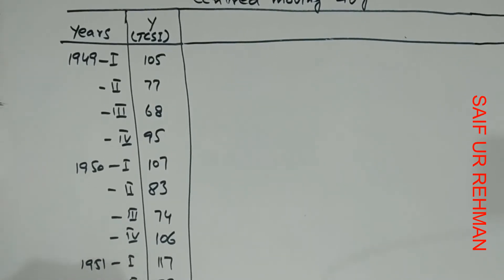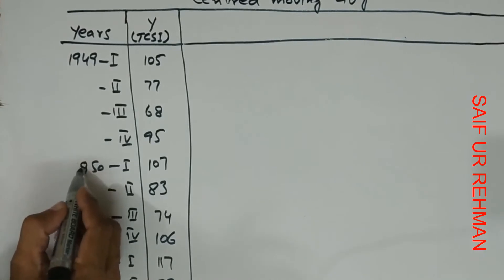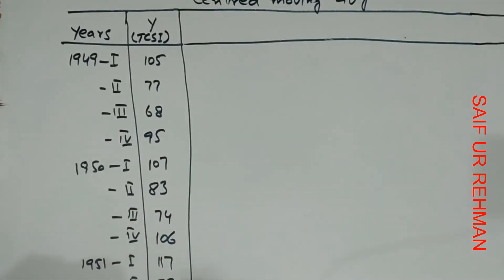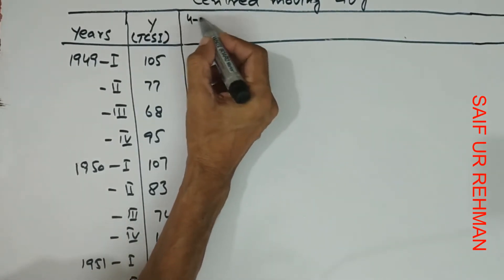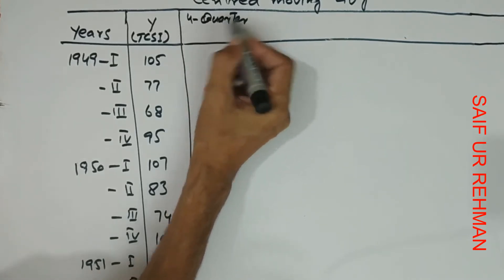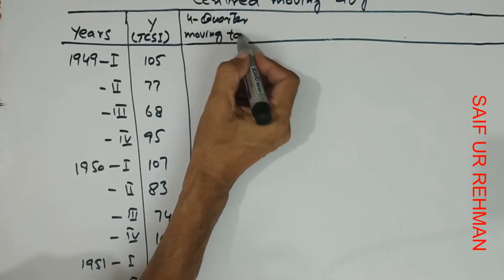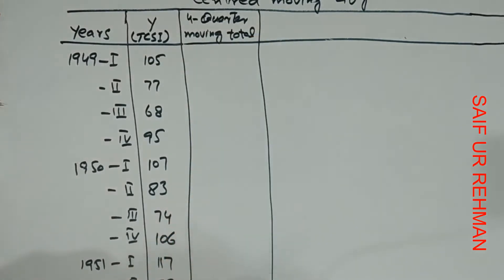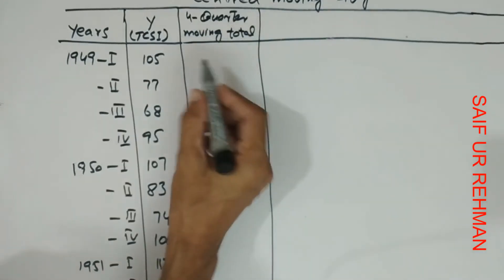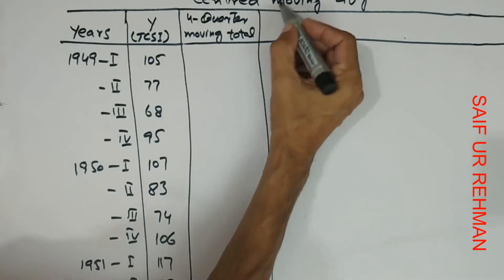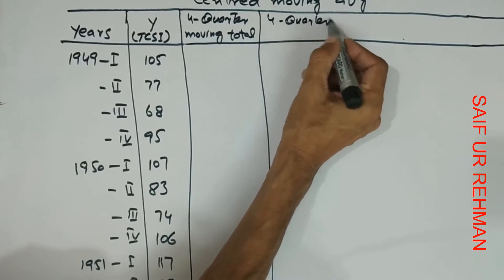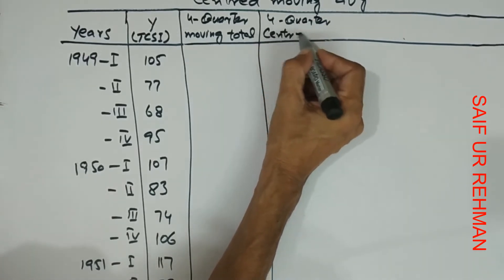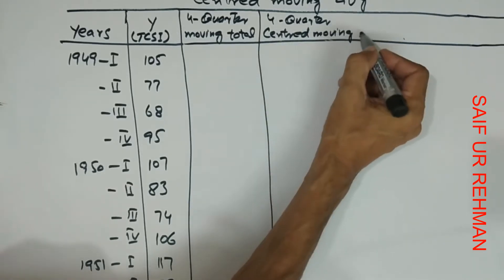Looking at this, I have years in the form of quarters. I have taken the values which are given in quarters. So first we set up columns: four-quarter moving total, then another four-quarter moving total, then the centered moving total, and finally the centered moving average.